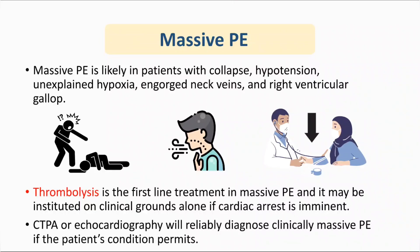What is massive pulmonary embolism? Massive PE is present when the patient has collapse, sudden loss of consciousness, hypotension not responding to fluid, unexplained hypoxia, engorged neck veins, or a right ventricular gallop on auscultation. This means the pulmonary embolism is very large, obstructing the main arteries. The treatment for massive pulmonary embolism is to proceed directly to thrombolysis.